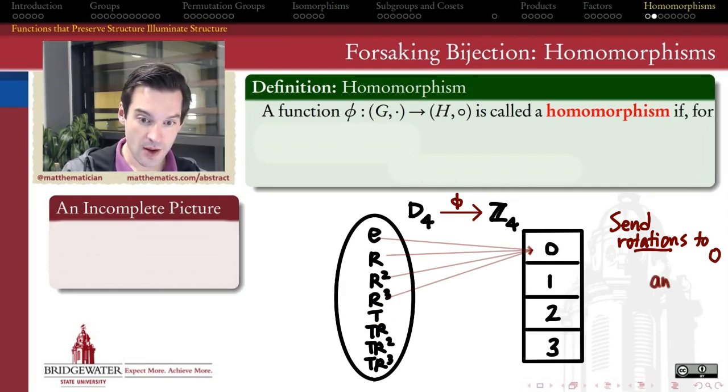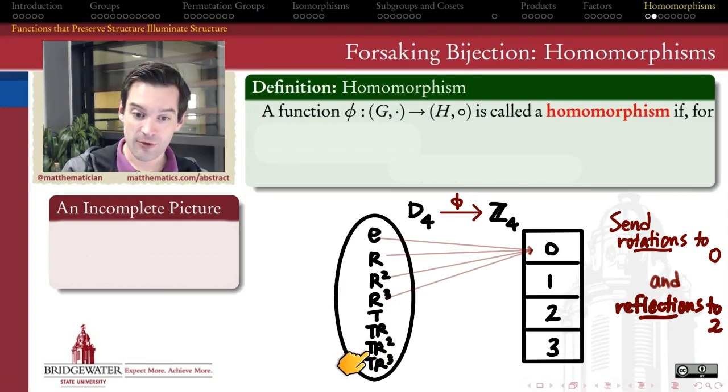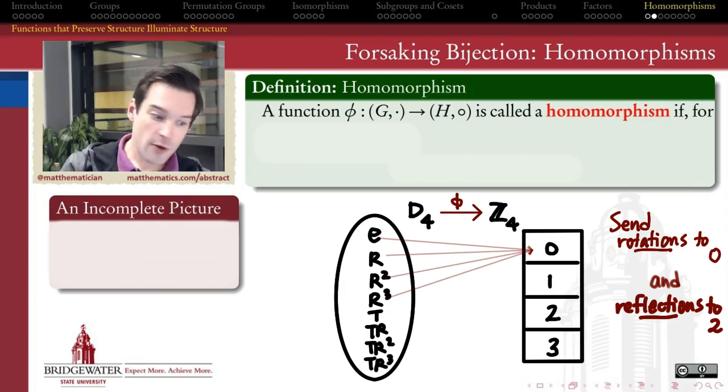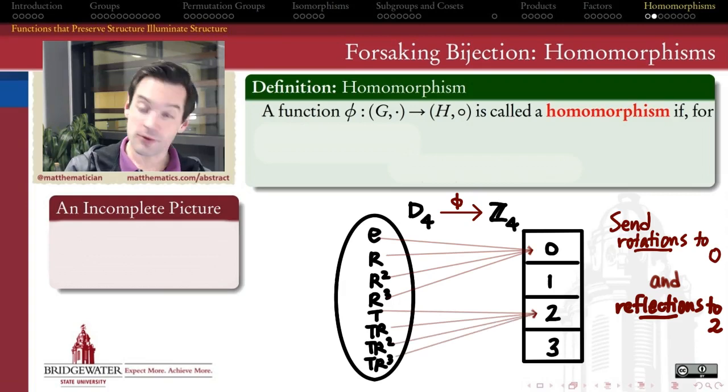Now, where should I send the reflections? If I want to send the reflections to somewhere that makes sense, they should be different from the rotations, so I don't want to send them to 0. I want to send them to 1, 2, or 3. But I want to send them to some place that acts enough like the reflections themselves that it will be able to stand in for them. What makes all these reflections similar to one another? They all are elements in the dihedral group of the square that have order 2. They're all equal to their own inverse. So it might be a good idea to send those elements to an element of Z4 which is its own inverse. And there's only one of those elements: the number 2 mod 4. So we can send all the reflections to 2.